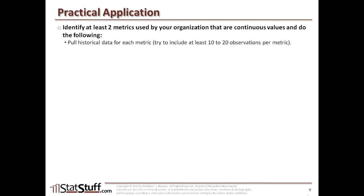Try to pull the historical data for each metric. If you can, aim for at least 10 to 20 different observations — more is better. Probably 20 or 30 observations will be ideal for this kind of small application for these different types of tests.